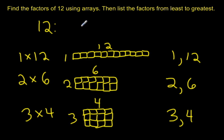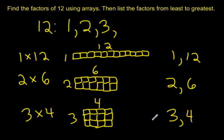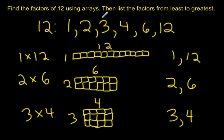So these are all the factors of 12. I want to write them in order from least to greatest. Going through my arrays: 1, 2, 3, and going up: 4, 6, 12. So the factors of 12 are 1, 2, 3, 4, 6, and 12. And I was able to make 3 different arrays using 12 tiles.